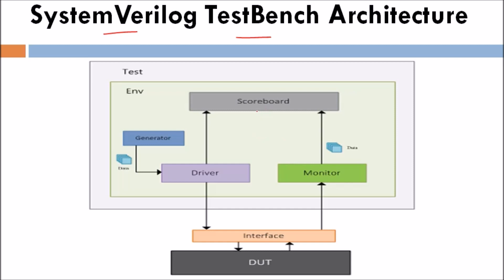The testbench or the verification environment is a group of classes or components, where each component is performing a specific operation — like a generator generating stimulus, a driver driving that stimulus, or a monitor monitoring. Those classes will be named based on that operation. So here we have a generator which generates the stimulus, a driver which drives the stimulus, a monitor for the output, and a scoreboard which compares the reference model and the DUT.